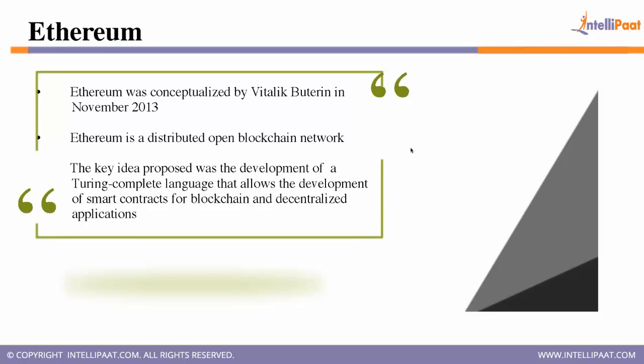A blockchain is a collection of blocks, all chained together in a chronological order. Inside the blocks there is data — transaction data or whatever kind of data. The data is sent into the blocks, validated, and then the block is mined. After the block is mined it is sent to the blockchain. That is how a blockchain network works.